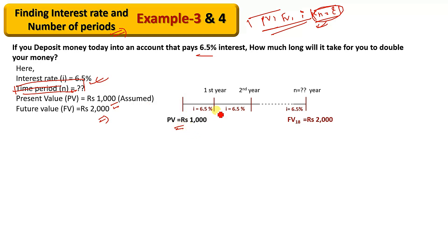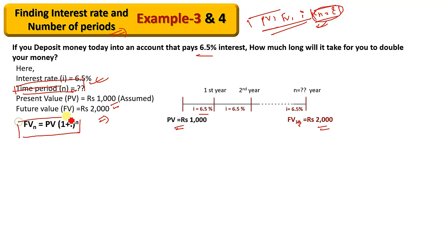We will assume that the interest rate is 6.5%. The future value is $2,000. So we start with present value of $1,000 and want to find how many periods it takes to reach a future value of $2,000.